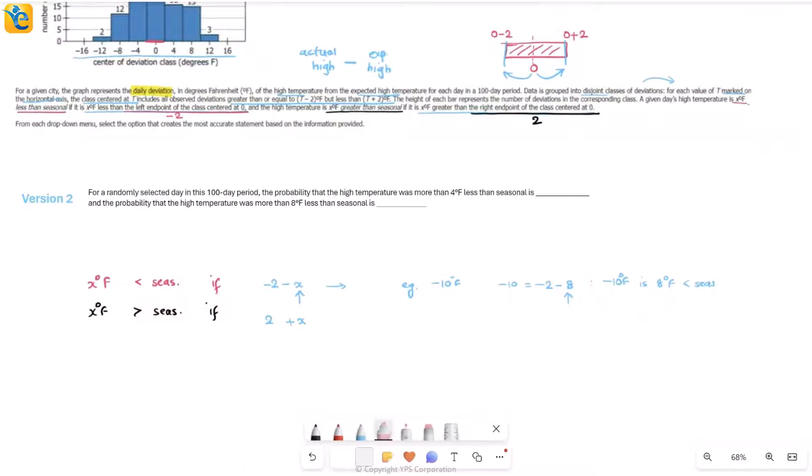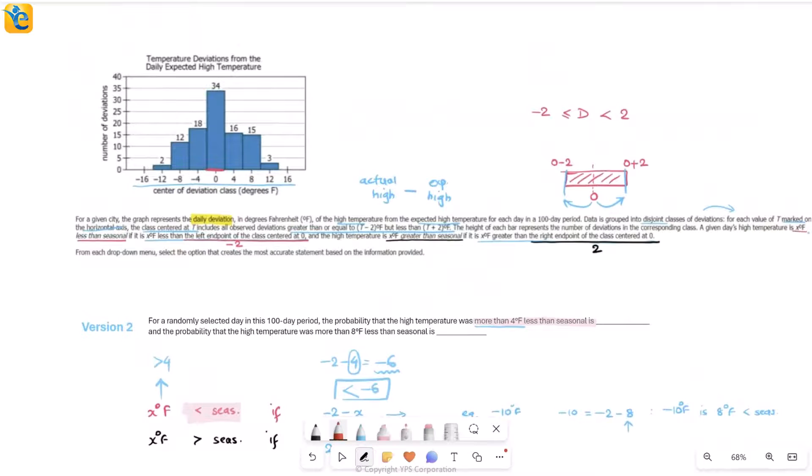Now let's also look at the second version. I have all of the same data set and this is the new version. For a randomly selected day in the hundred-day period, probability that the high temperature was more than four degrees Fahrenheit less than seasonal. So this time my question is about the less than seasonal case, so I'll take this first line. How much less am I saying? More than four degrees Fahrenheit less, which means this x is more than four. Now you see where this x was sitting - it's negative 2 minus x. So when I subtract four from negative 2, I get negative 6. But since I'm subtracting something more than four, the result will be even more negative, that means I will get something less than negative 6.